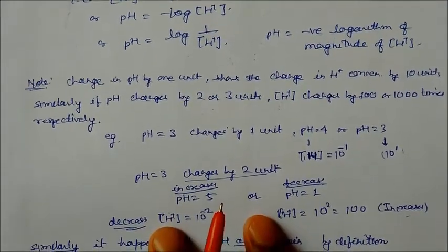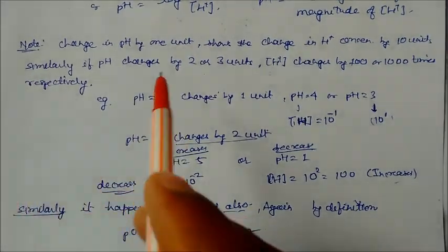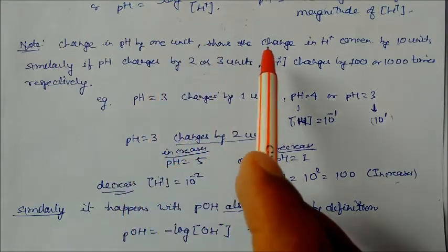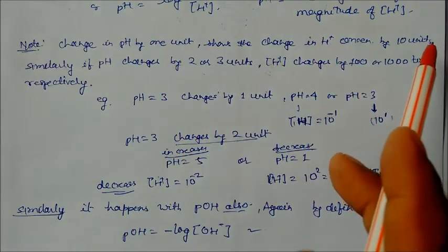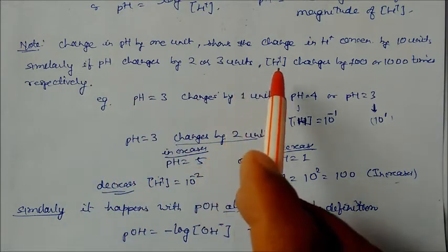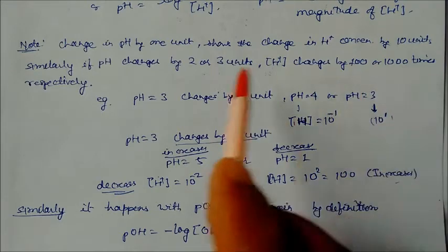So what is the significance? If you change the pH by 1 unit, it will show the change in H+ concentration by 10 units. Similarly, if you change the pH by 2 or 3 units, the concentration of H+ will be changed by 100 or 1000 times respectively.